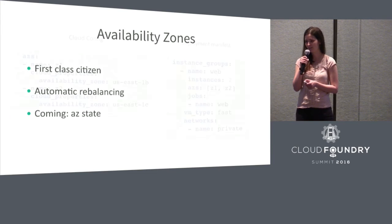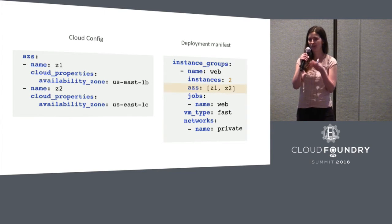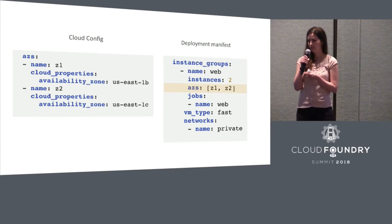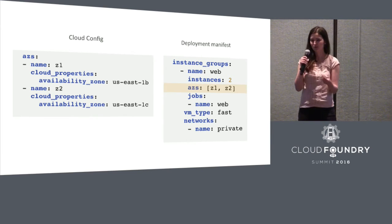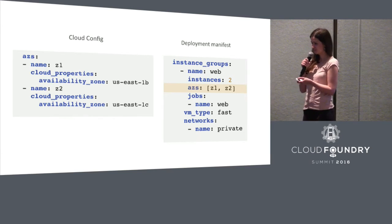We also plan on adding a feature to manage your availability zone state — you can turn off your availability zone and Bosch will distribute instances in that availability zone across the remaining availability zones. You specify the list of availability zones with their cloud properties in the cloud config, then reference them in your instance group. As you can see, there is no duplication — it's much smaller and looks much nicer.